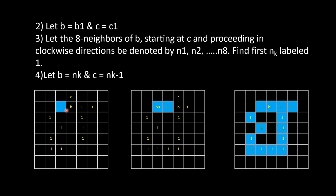So let us take B1 and C equals to C1. Let the 8 neighbors of B starting at C and proceeding in clockwise directions be denoted by N1, N2 and so on till N8. So let us find the first NK labeled 1. Let B equals to NK and C equals to NK minus 1. And the process continues.